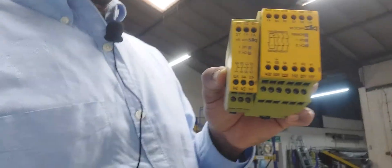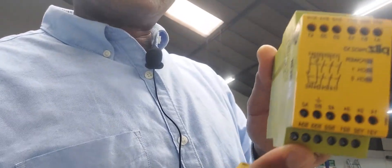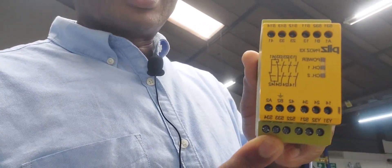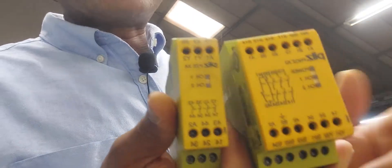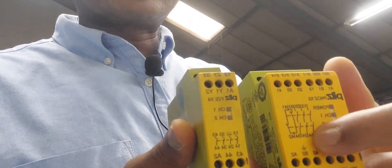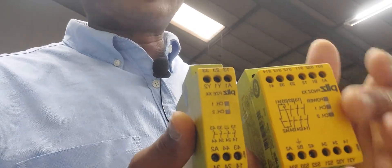This is another one, it's a bigger one with more contacts. This one is a PNOZ X3. The only difference is that this one has more contacts and this one has less contacts. This can do more than this, but they are both the same.